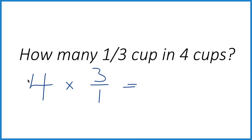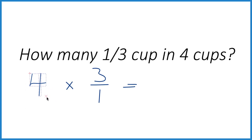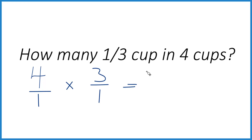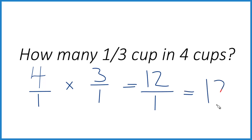When we're multiplying fractions, it's easier to write four as four over one — it's still equal to four, but now everything lines up. We multiply the numerators: four times three is 12. Then the denominators: one times one is one. And 12 over one is just 12.